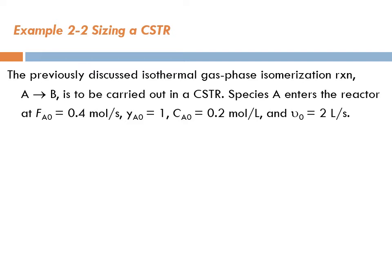Species A enters the reactor at FA0 equals 0.4 mol per second, with pure A, YA0 equals 1, CA0 equals 0.2 mol per liter, and υ0 equals 2 liters per second. So we have all the specifications of the feed.